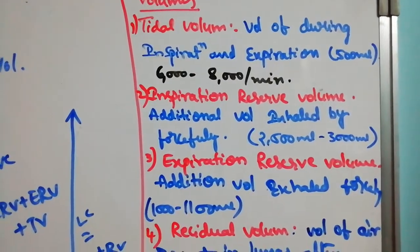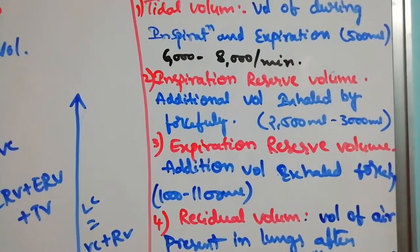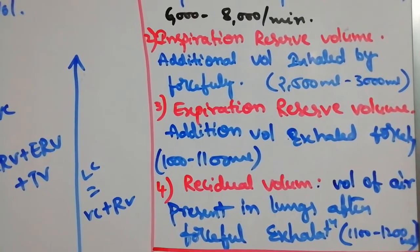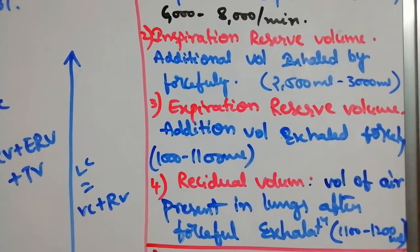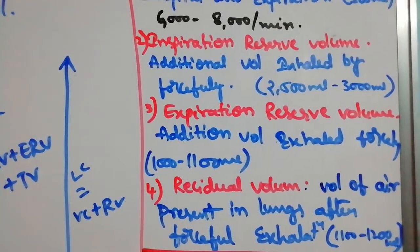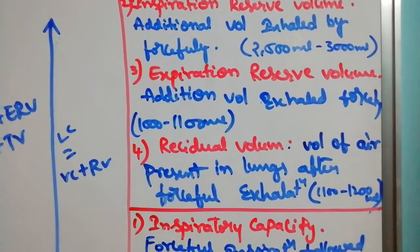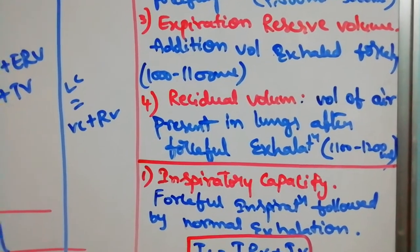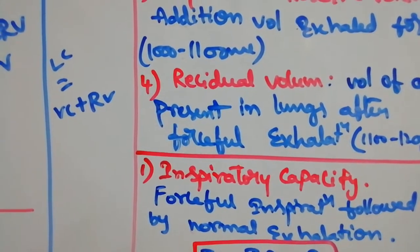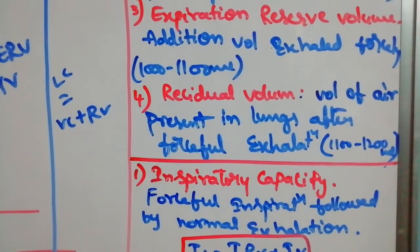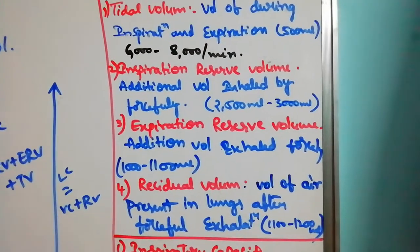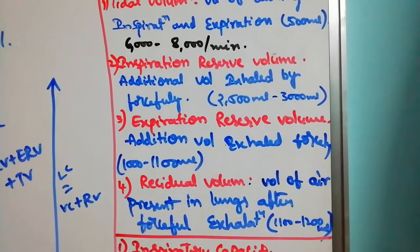To repeat the four lung volumes: Tidal Volume (TV) during normal inspiration and expiration is 500 ml, with 6,000 to 8,000 ml per minute. Inspiratory Reserve Volume (IRV) is the additional volume forcefully inhaled: 2,500 to 3,000 ml. Expiratory Reserve Volume (ERV) is forceful exhalation: 1,000 to 1,100 ml. Residual Volume (RV) is 1,100 to 1,200 ml.